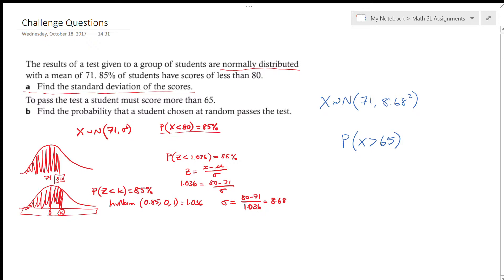So really we just want to find out what's the probability that they get more than 65, which remember the mean is 71, so there's probably a pretty good chance they're going to get that.